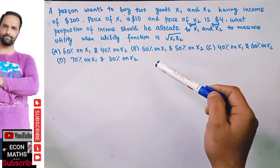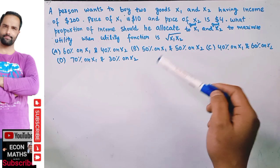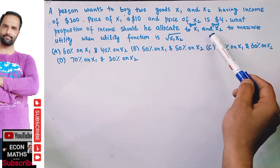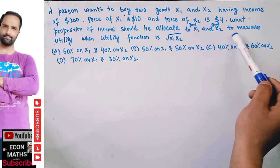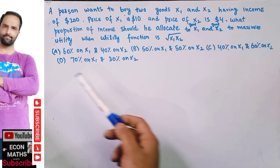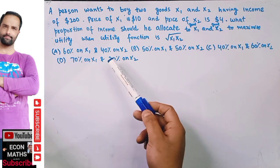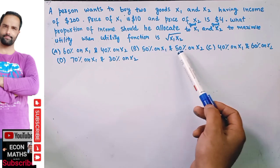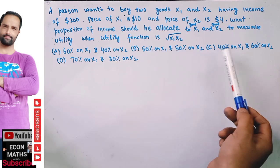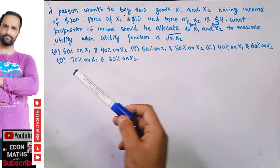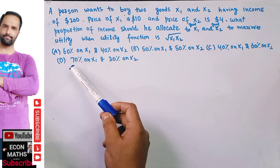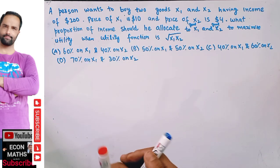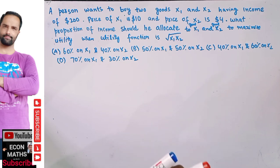We need to find what percentage of income he will allocate for good X1 and good X2. The options are: 60% on X1 and 40% on X2; 50% on X1 and 50% on X2; 40% on X1 and 60% on X2; or 70% on X1 and 30% on X2.